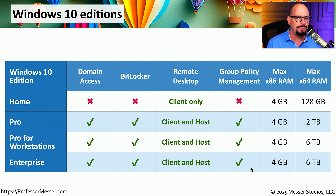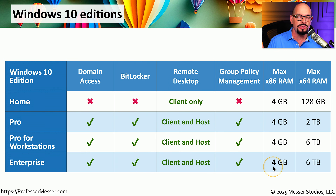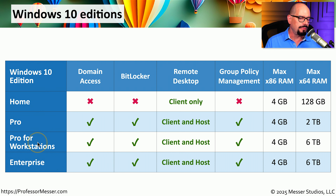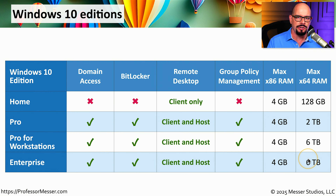Because 32-bit operating systems only support 4 gigabytes of memory, all versions are limited to 4GB in 32-bit mode. The maximum amount of memory for Windows 10 Home is 128 gigabytes, for Windows 10 Pro it is 2 terabytes, and for Pro for Workstations and Enterprise, the maximum is 6 terabytes.